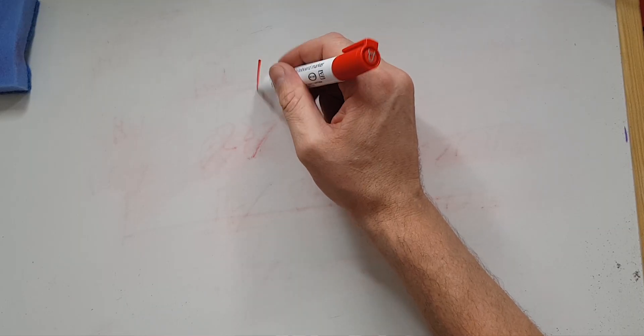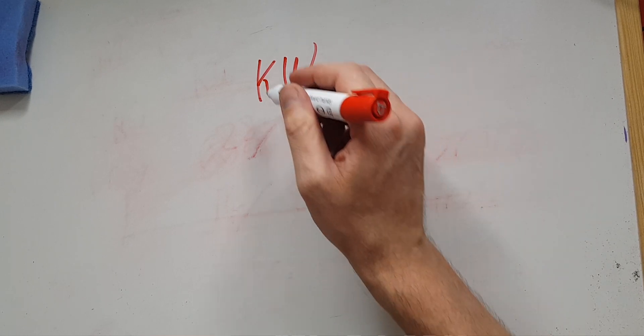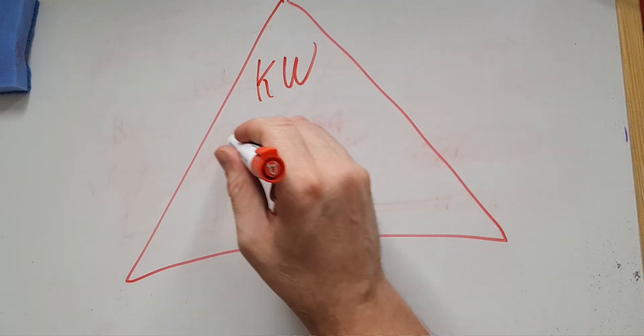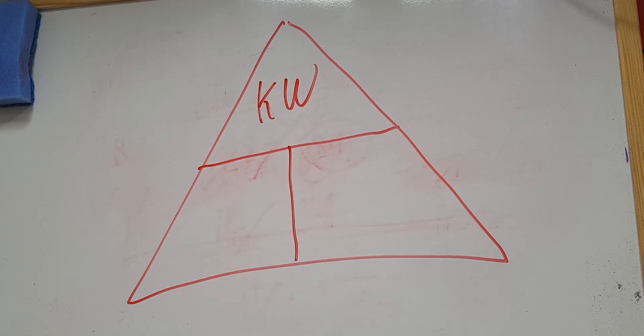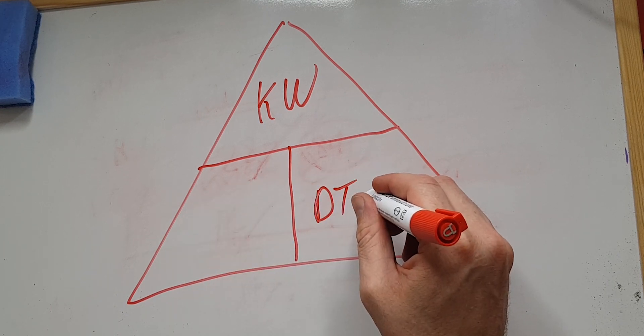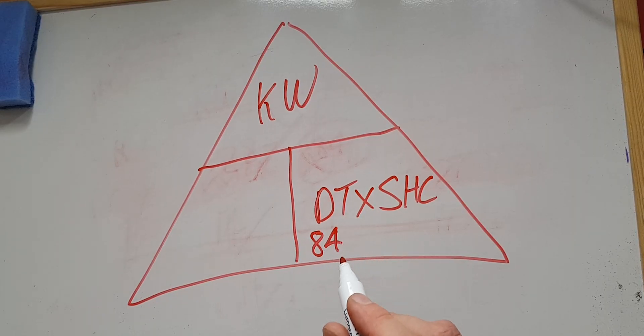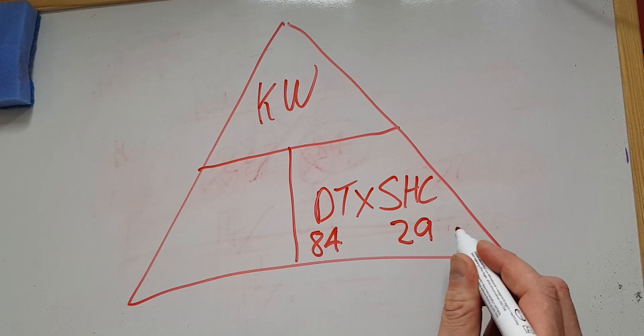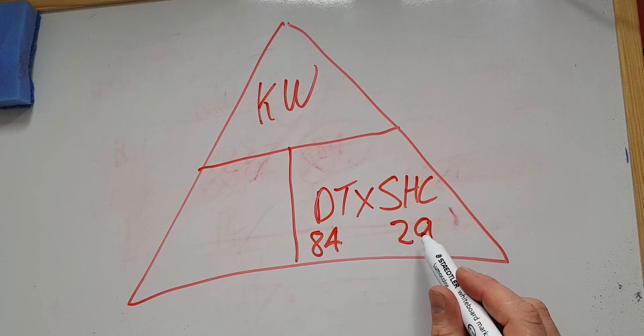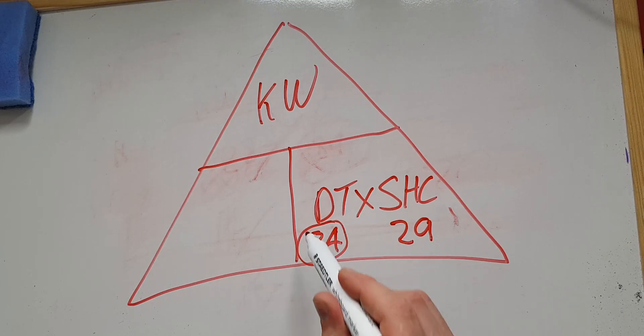So the magic triangle looks like this — kilowatts at the top of a triangle. You might recognize this triangle from Ohm's law. Kilowatts over delta T times specific heat capacity. Which is nearly always 84 — remember that. The other one to remember is 29, or 29.5 if you want to be precise — that is for underfloor. So radiators use 84, underfloor uses 29.